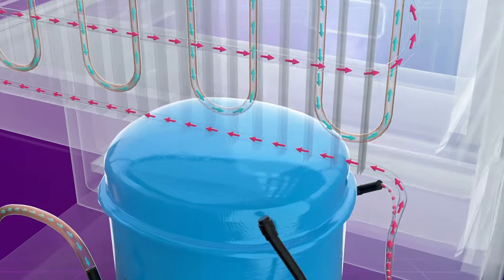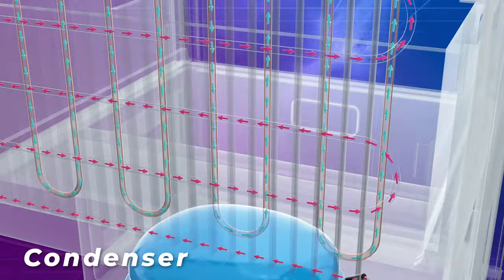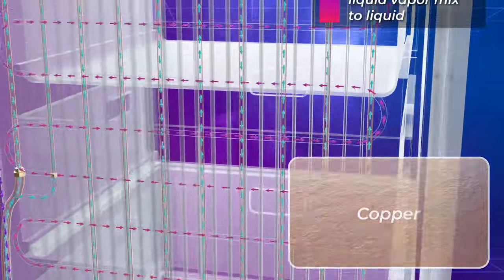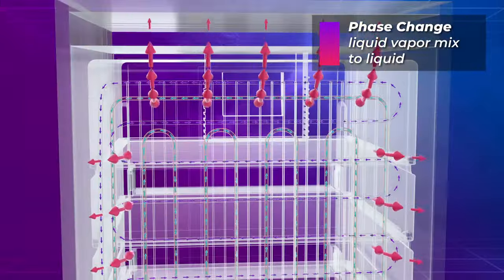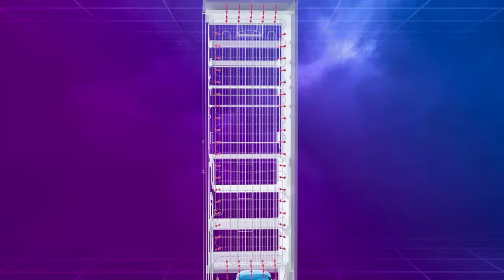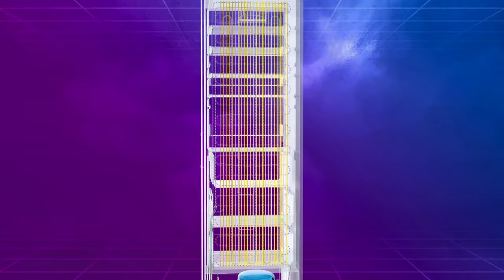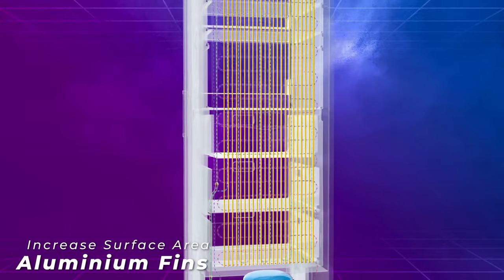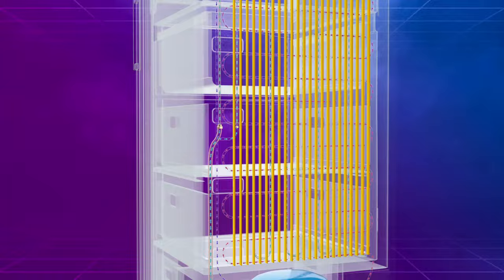Next, the refrigerant moves through the condenser coil, typically made of copper, where it condenses into a liquid and releases heat to the environment. Aluminum fins increase the contact area with the outside air and increase the heat transfer.